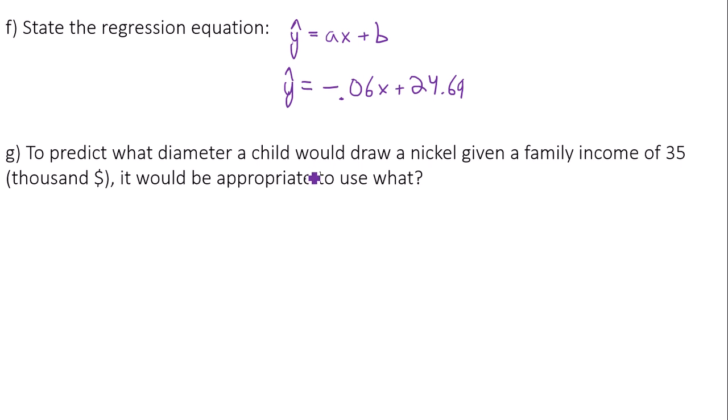To predict what diameter a child would draw a nickel, given a family income of $35,000, it would be appropriate to use what? In other words, can I just plug in this income of $35,000 into the equation and figure out how big the child would draw the nickel? And the answer is there is no linear correlation based on our test we just conducted. So we cannot use the regression equation. The equation that we just found we cannot use it because there is no linear correlation. There is no evidence for it. So you cannot use the equation to make predictions.